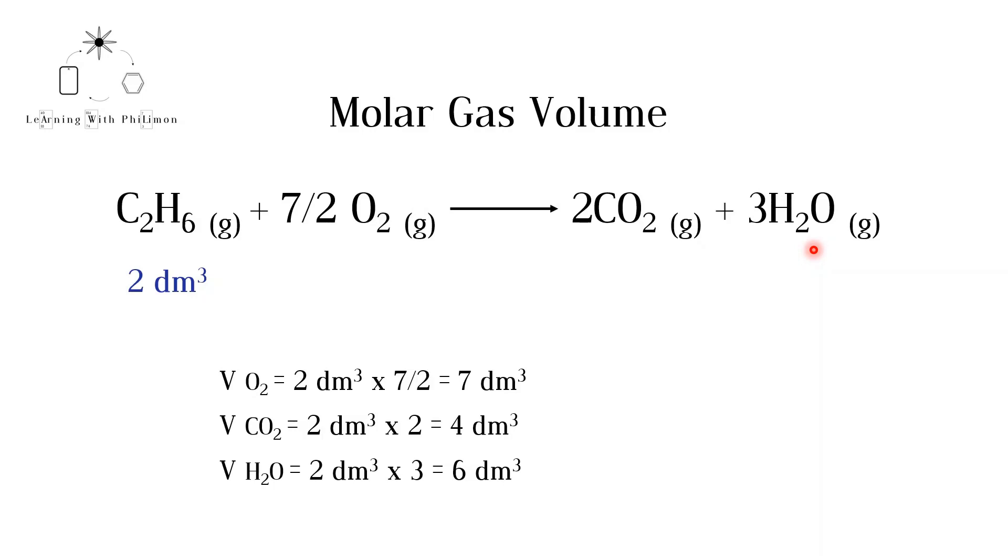The volume of ethane is given as 2 decimeters cubed. The ratio between ethane and oxygen is 1 to 7 over 2. Multiplying 2 by 7 over 2, we get the volume of oxygen that is required to react with 2 decimeters cubed of ethane.